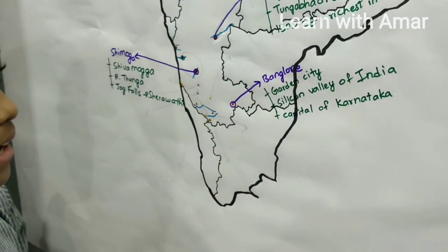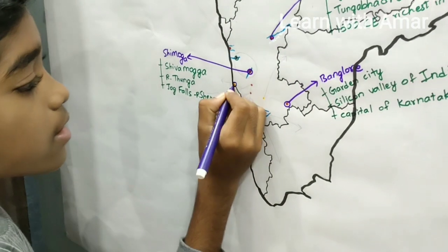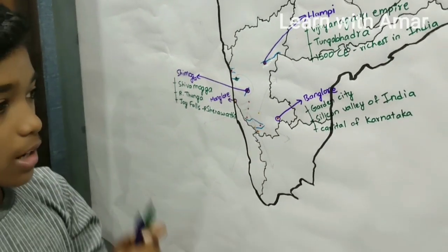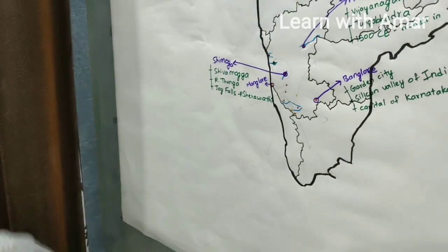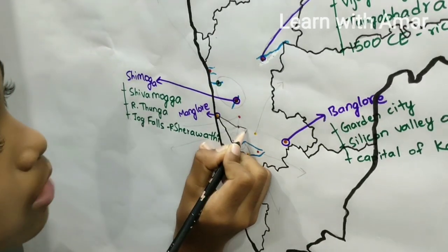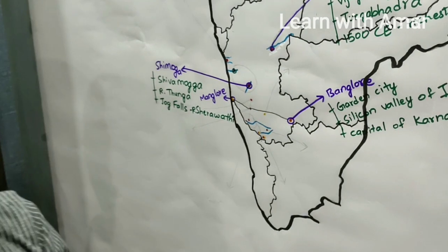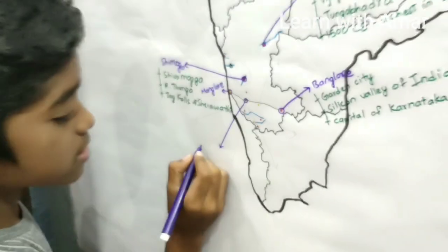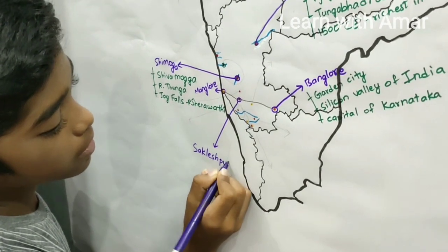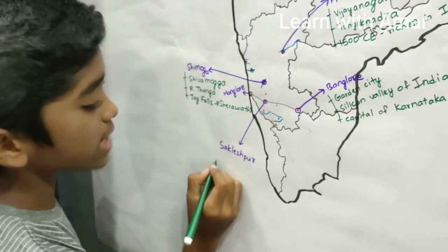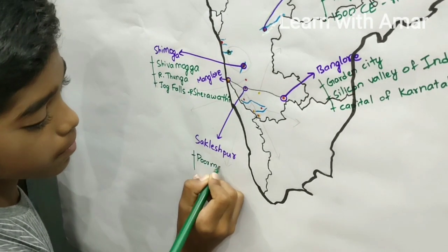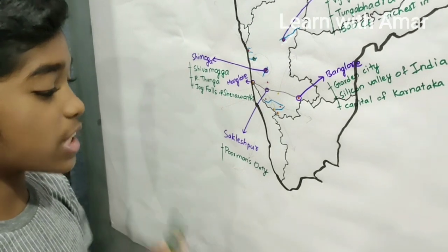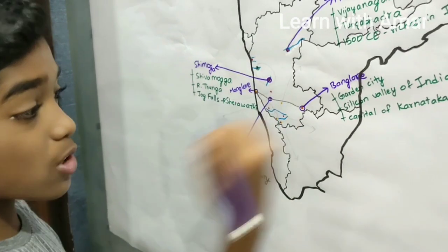That's it for Bangalore, and right here is Mangalore. Now let's locate the highway between Bangalore and Mangalore. On this highway while we are traveling, we find Sakleshpur. Sakleshpur is a hill station and it was known as Purman's Ooty during British rule.